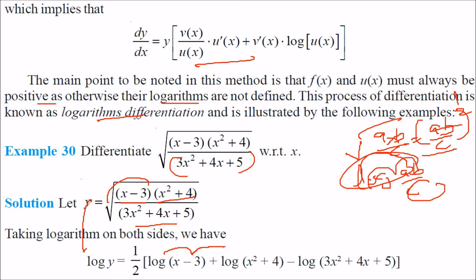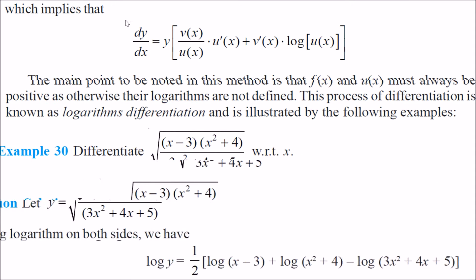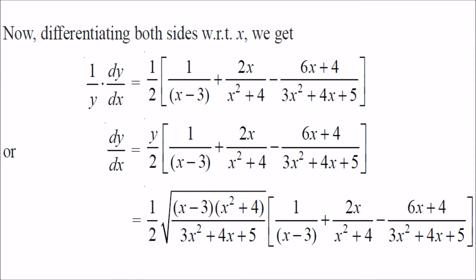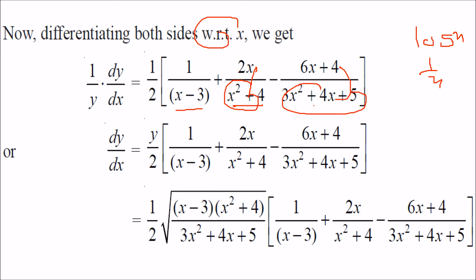So log y equals one-half times [log(x+3) + log(x-3) + log(x²+4) minus log of the denominator]. When we differentiate both sides with respect to x, we get 1/y · dy/dx equal to one-half times [1/(x+3) + 1/(x-3) + 2x/(x²+4) minus the derivative of the denominator term], since the differential of log x is 1/x.